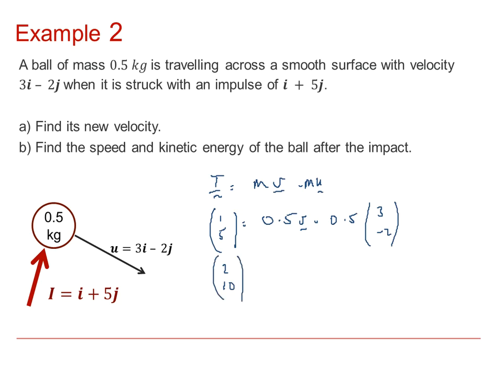And then we're going to add to that, 3, negative 2, and that will be equal to v. So, that v is given by the vector 5, 8, which is 5i plus 8j.